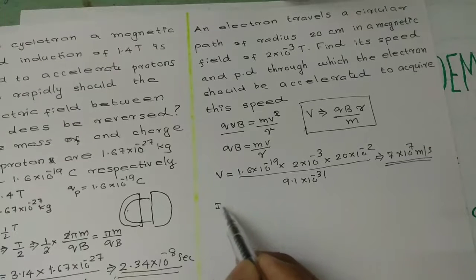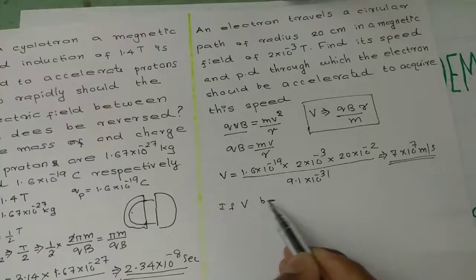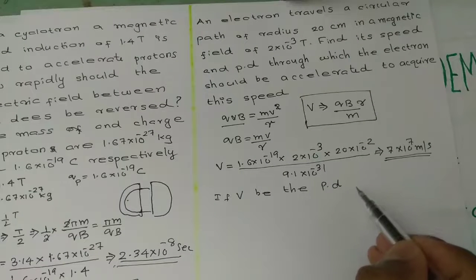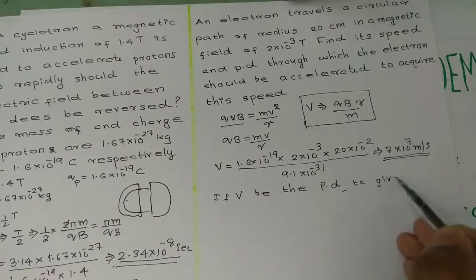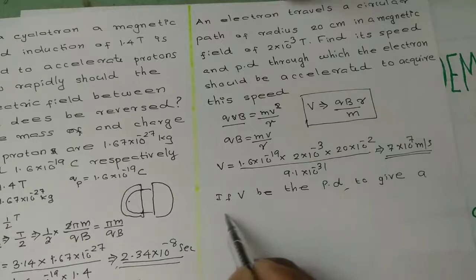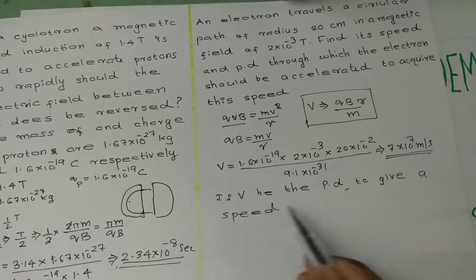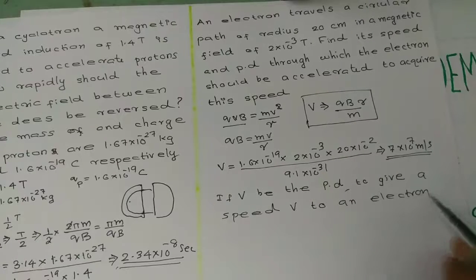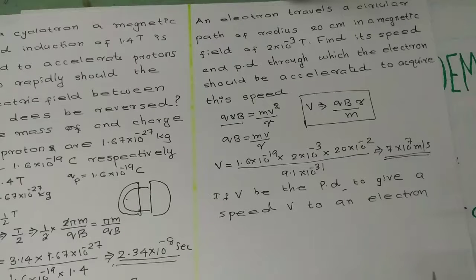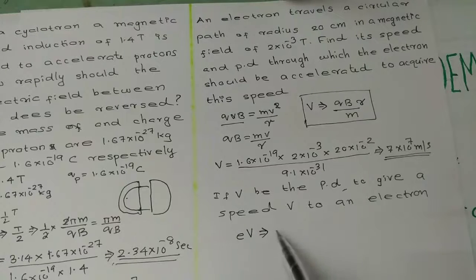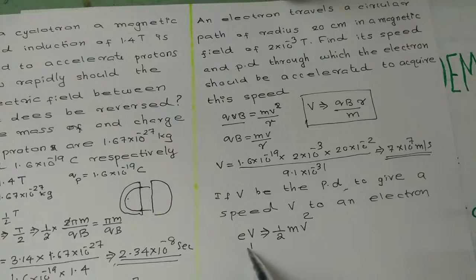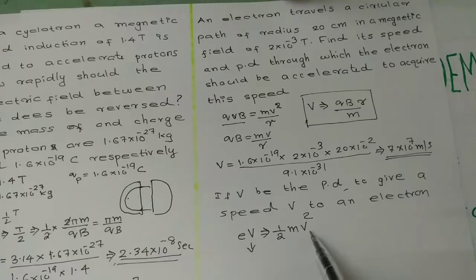If V be the potential difference to give a speed v to an electron, then we can write eV = ½mv². Here, V represents potential difference and v represents velocity.